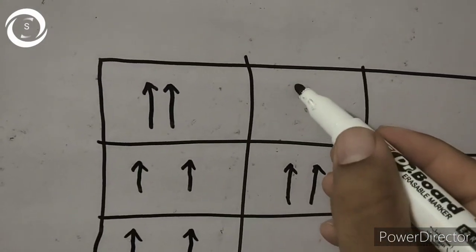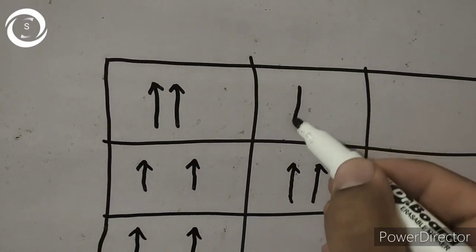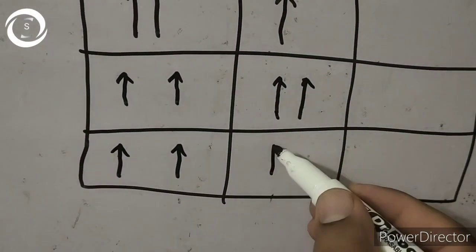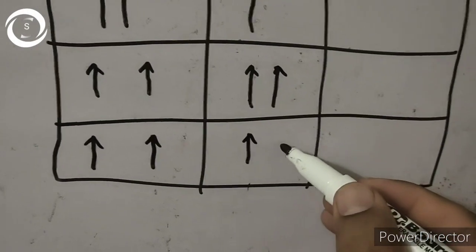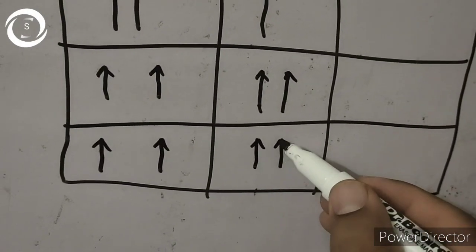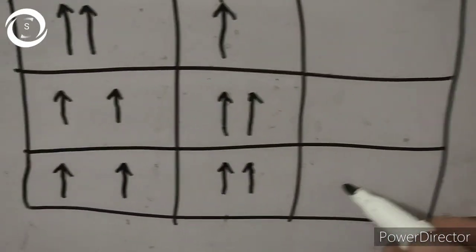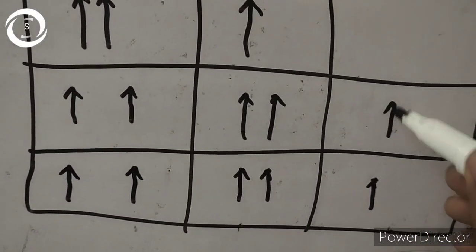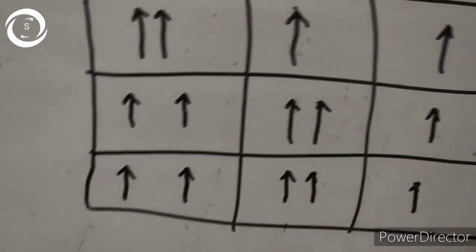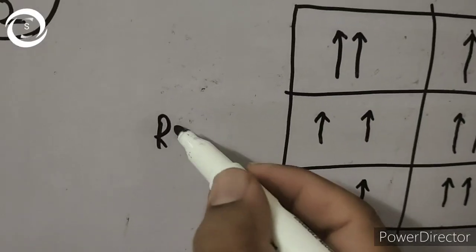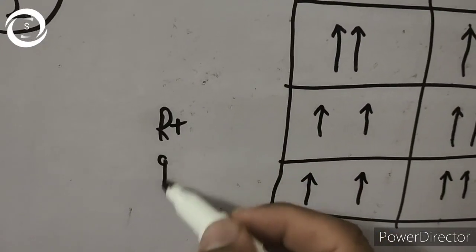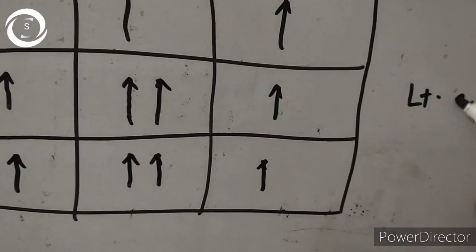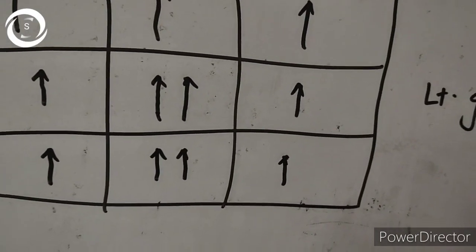In the right and up position the separation was not that much. In primary up position there was a single image. In primary down position again there was diplopia but the pens were near to each other. In the left gaze the patient was seeing a single pen. So that's how you plot diplopia in an actual patient.